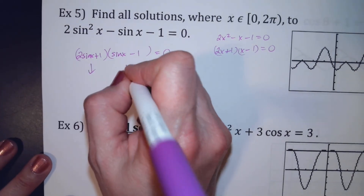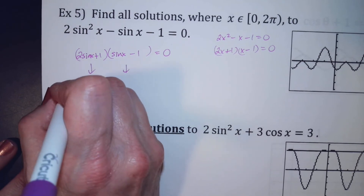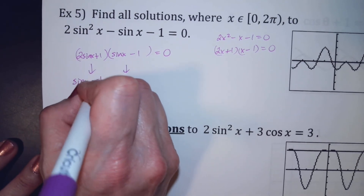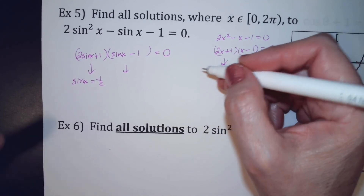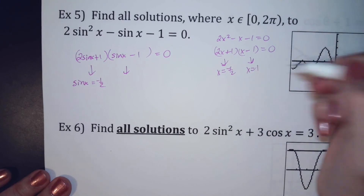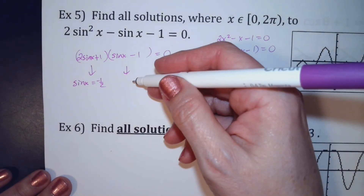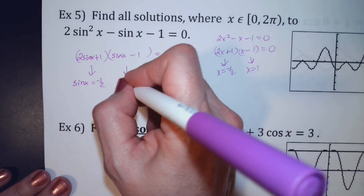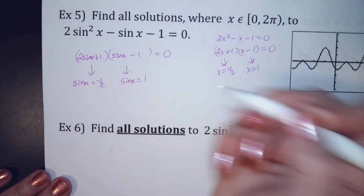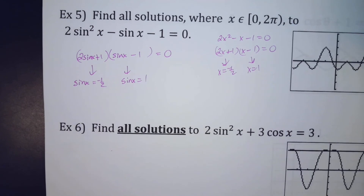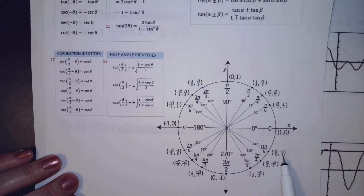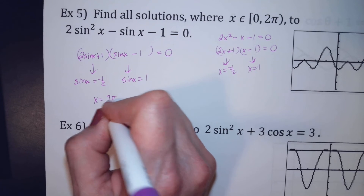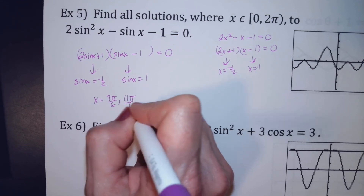So I have (2 sin x + 1)(sin x - 1). Set each part equal to 0: from 2 sin x plus 1 equals 0, I get sin x equals negative 1/2. And from sin x minus 1 equals 0, I get sin x equals 1. Where from 0 to 2pi is sine negative 1/2? Using ASTC, looking down here — it's at 7pi over 6 and 11pi over 6.